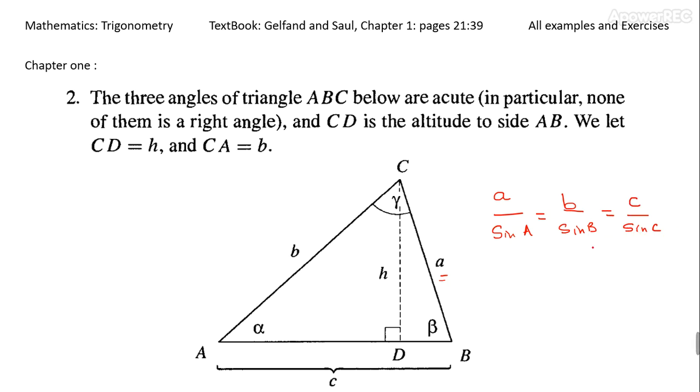say alpha, beta, and gamma. This theorem, which is the law of sines in a triangle, is proved very beautifully by Gelfand using the idea of areas.